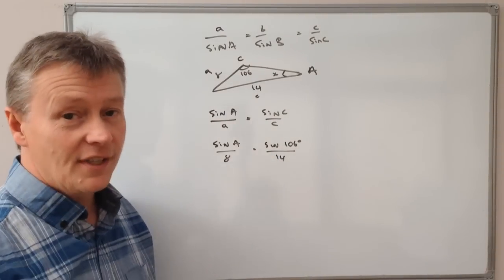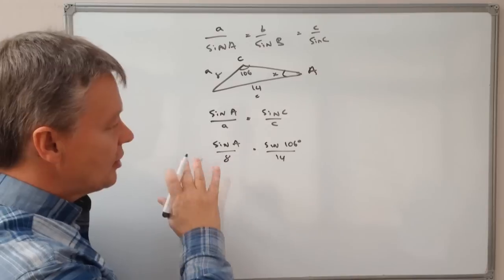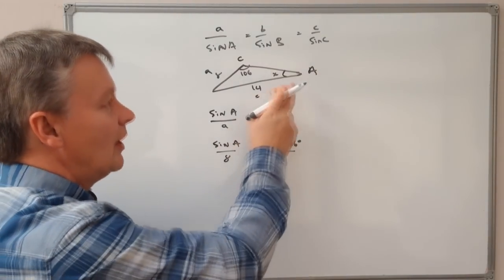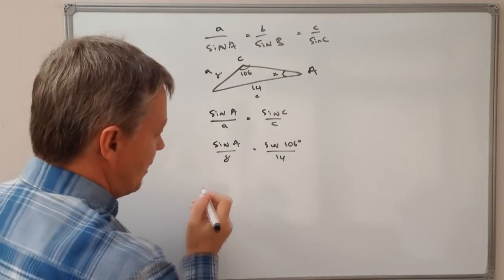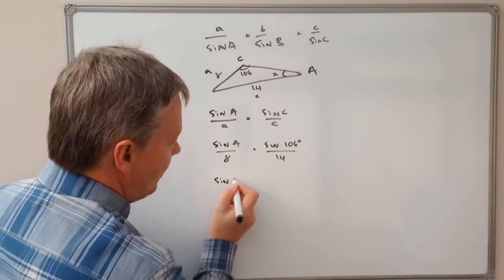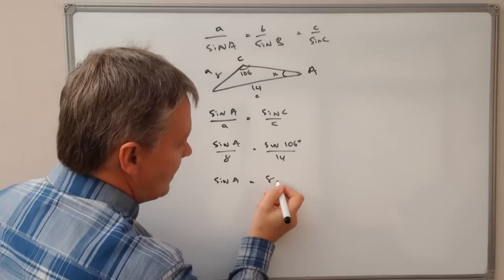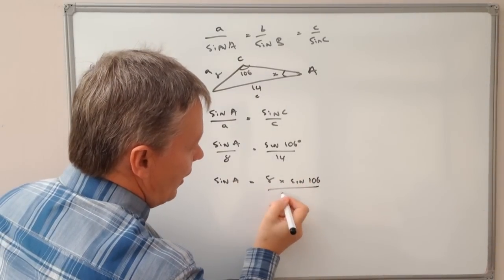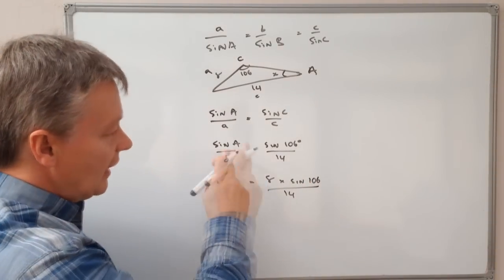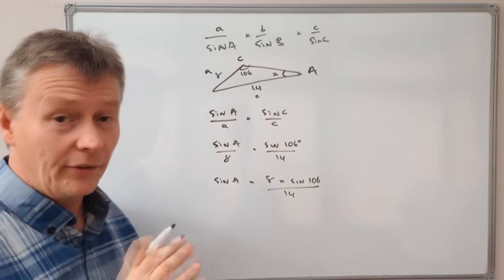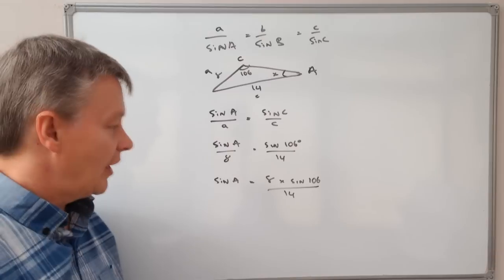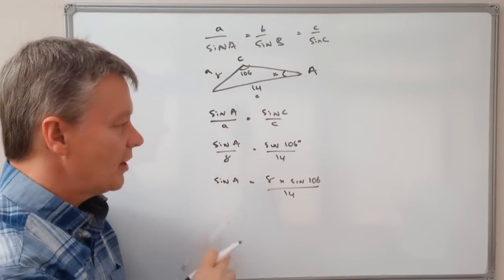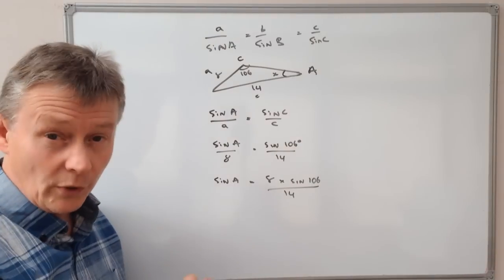Okay, so what I'm going to do now is a little bit of algebra to make sure that I cross multiply and it will allow me to calculate the value of A or X in this particular case. So sine A equals eight times sine 106 divided by 14. If you need to know how to manipulate that, if you have a look at some of the other videos, that will show you how to manipulate linear equations in order to get the subject on one side.